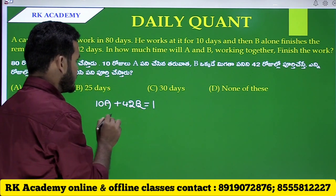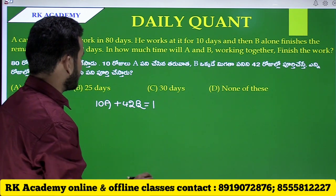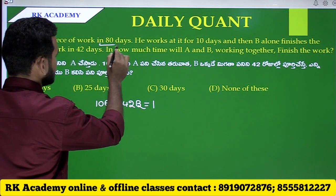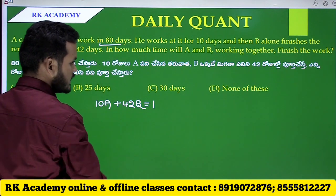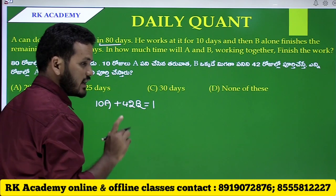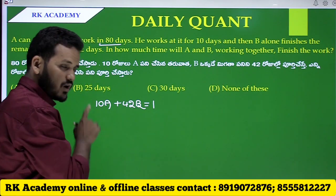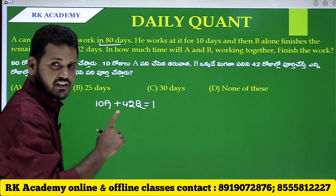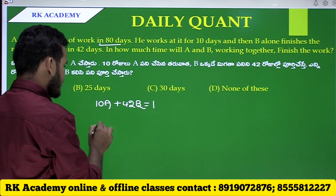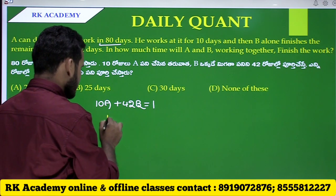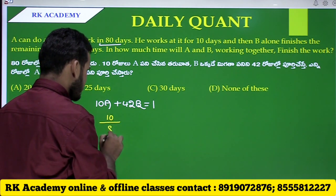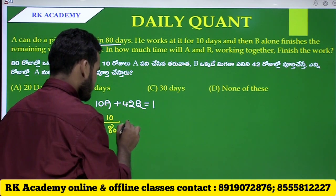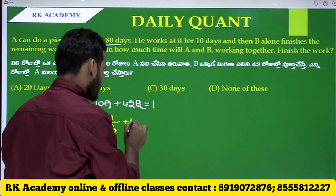A's work in one day is 1 by 80, because A takes 80 days. So in 10 days, A completes 10 by 80. Then B takes 42 days for the remaining work.